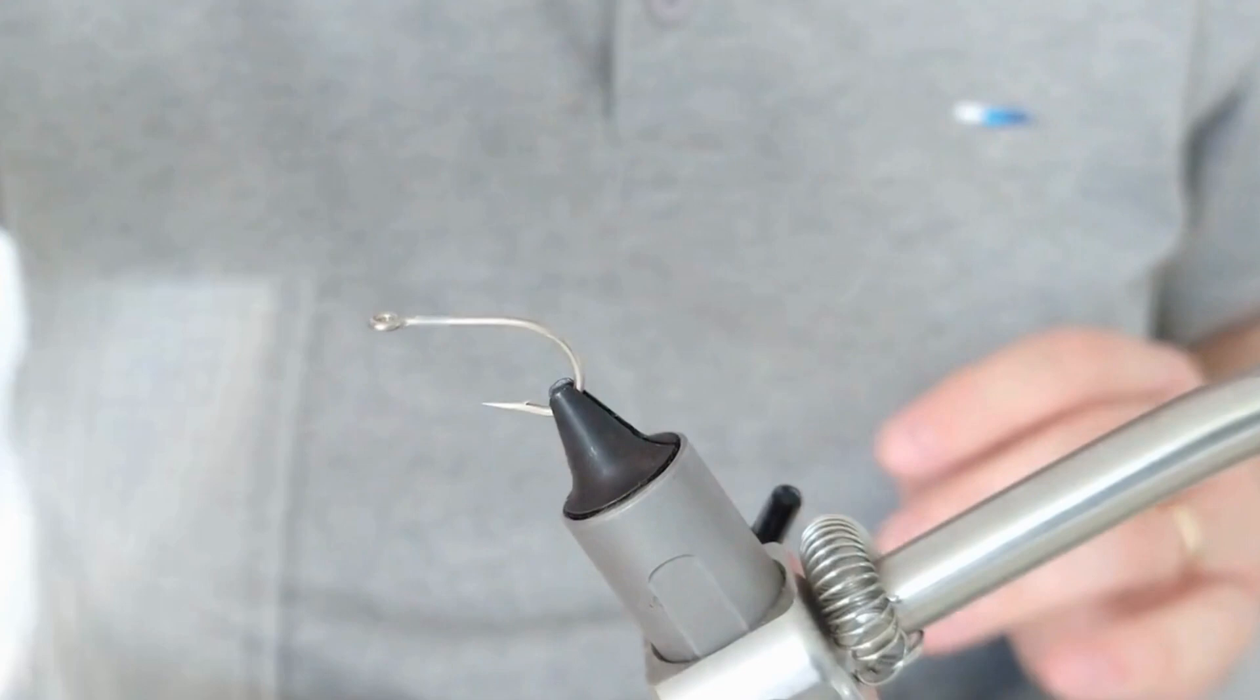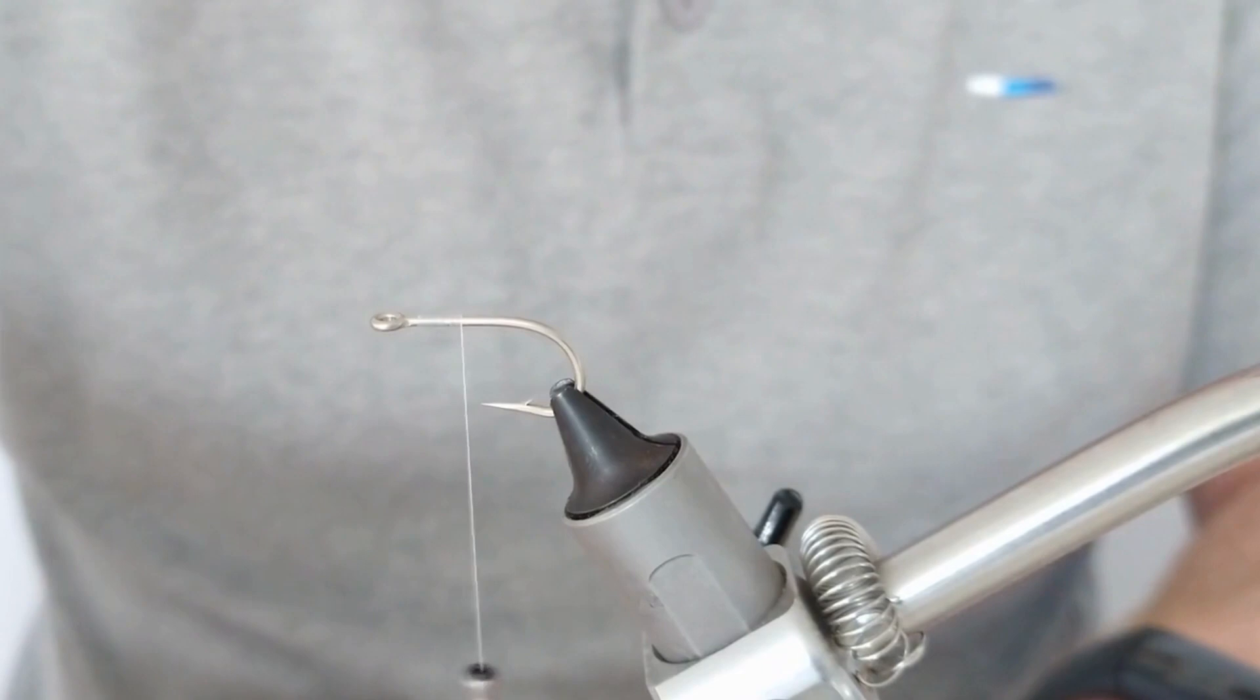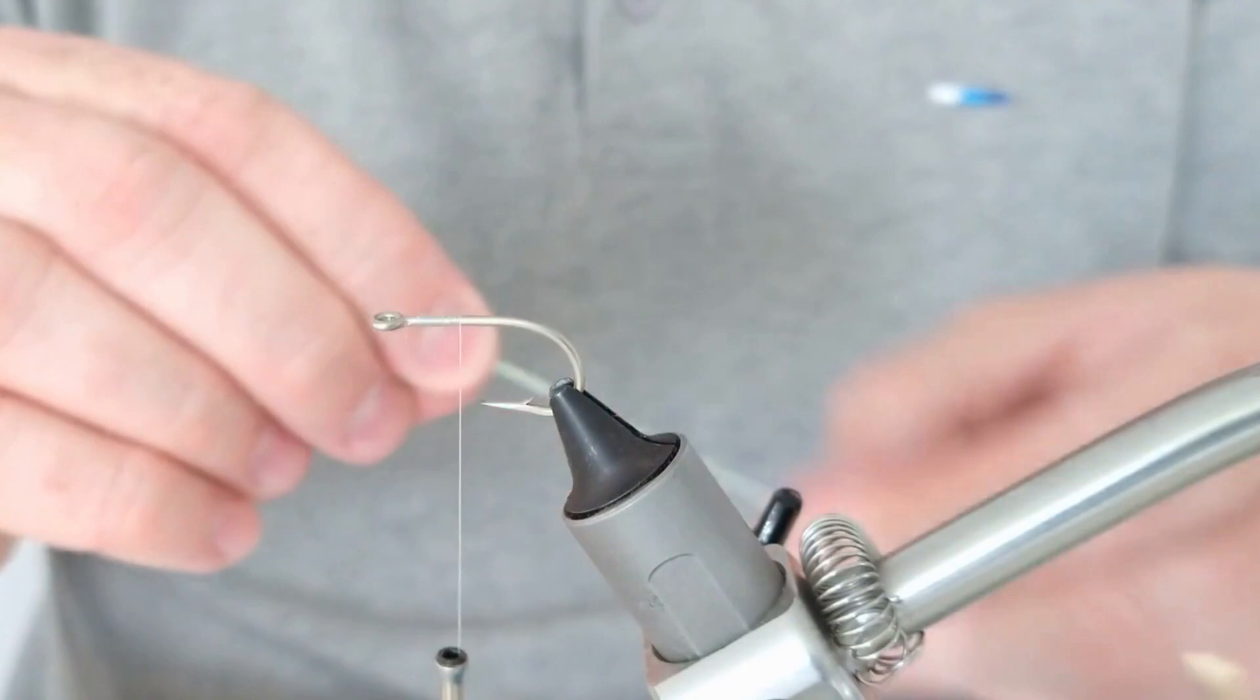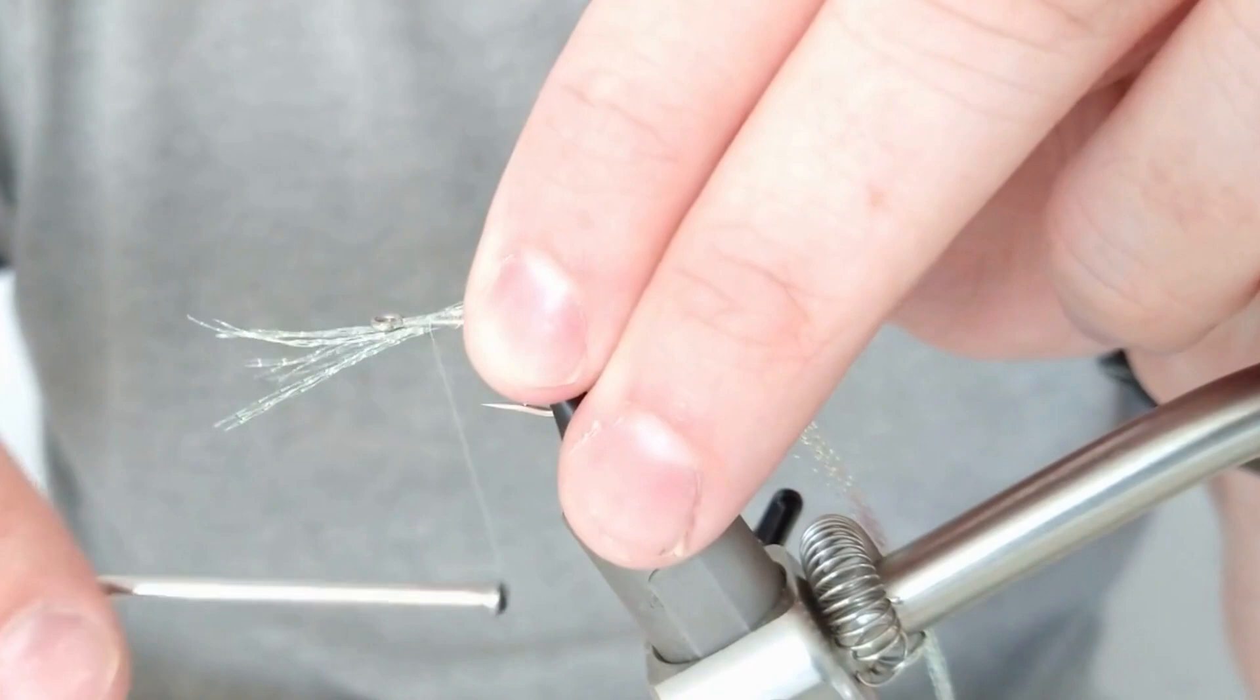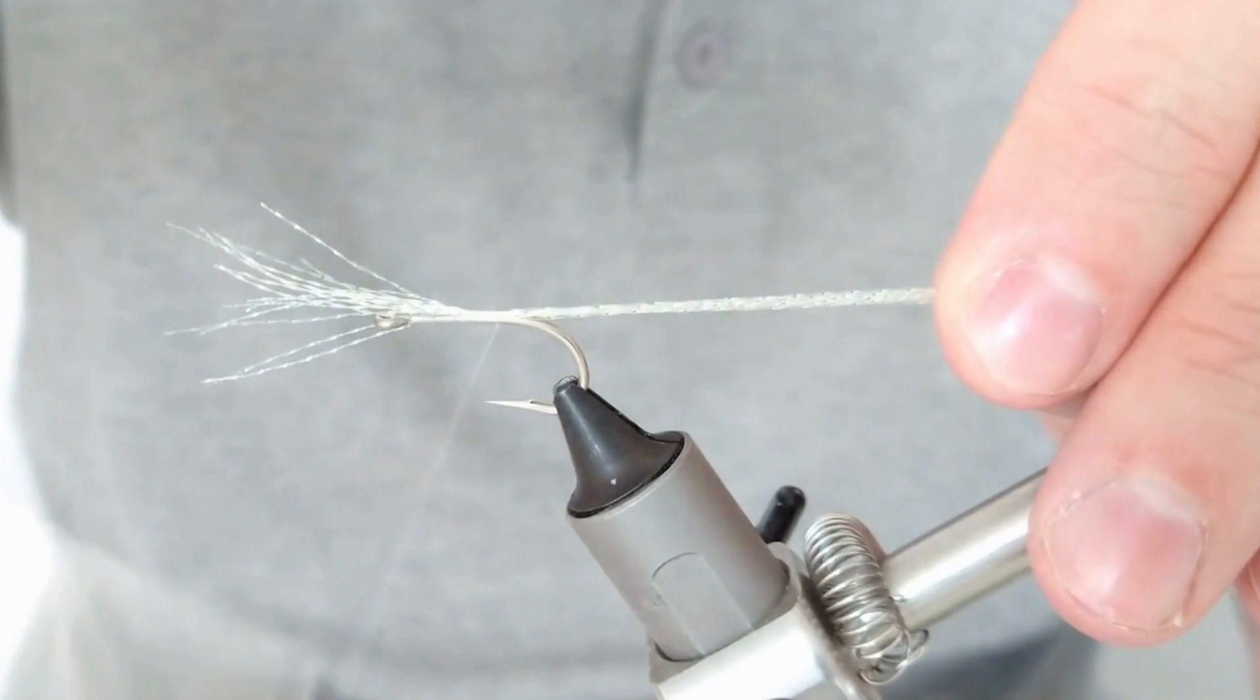So just add the thread on as normal. For the body of this, it's all made of synthetics, so the body is going to be made of crystal flies, pearl crystal flies. As we come down the hook, we're just going to add that in. It doesn't need to be too neat; this is all going to be covered anyway.